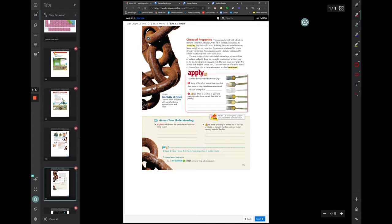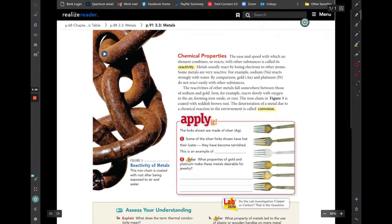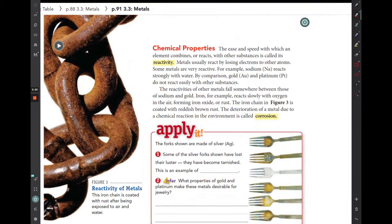Those are the physical properties of metals, and we'll take just a quick look at the chemical properties of metals as well. The ease and the speed at which an element can combine or react with other substances is what we call its reactivity. So if something can react with something else or combine with another element, we say that it is reactive.